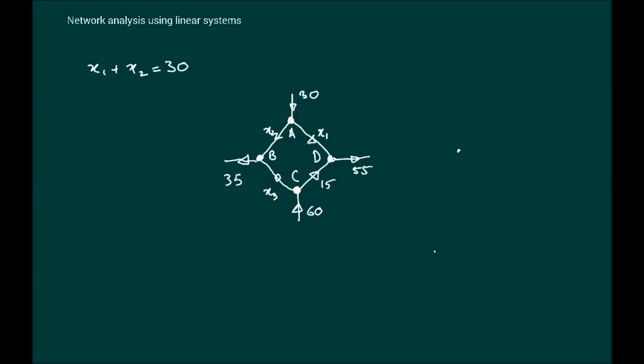If we look at the next node, we have 15 is flowing in, X1 is flowing in, so X1 plus 15 gives you 55. So you have X1 plus 15 is 55. The next node, clearly the X3 plus 15 must be 60, so X3 plus 15 is 60. And the final one, node B, is that X2 plus X3 equals 35. We have a set of equations.